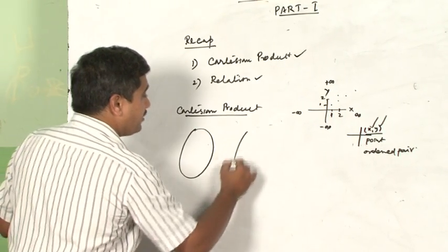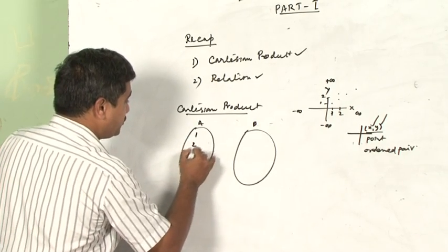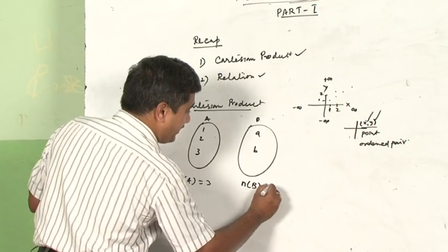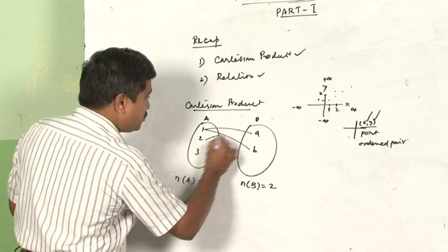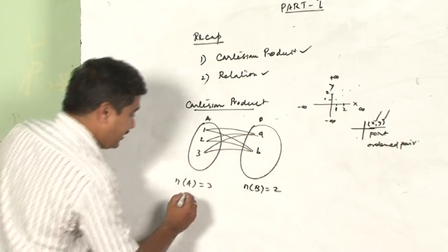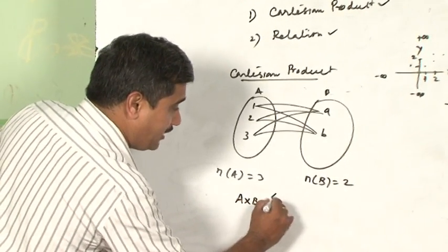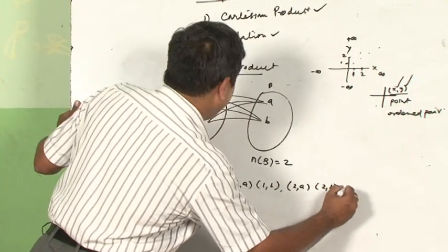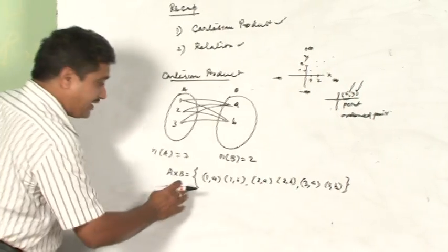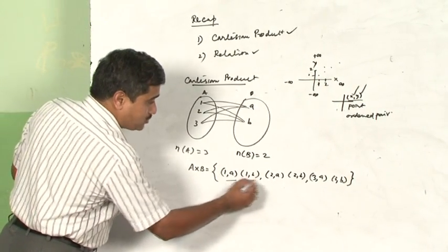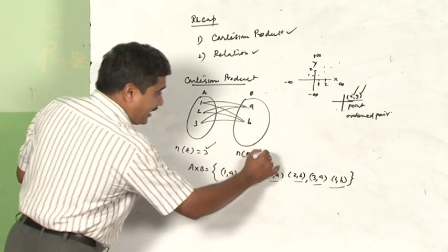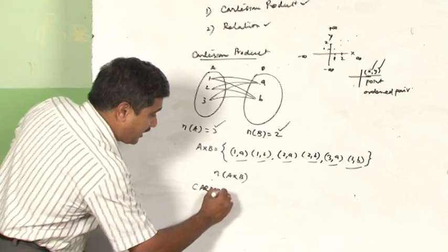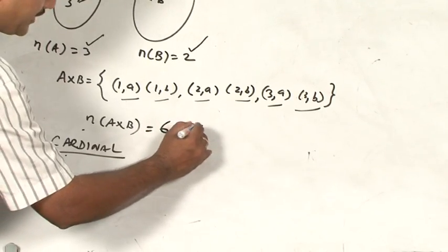Let us look at Cartesian product with two sets: A = {1, 2, 3} and B = {a, b}. Set A has three elements and set B has two elements. Connecting them gives ordered pairs: (1,a), (1,b), (2,a), (2,b), (3,a), (3,b). If you count, that is six ordered pairs. So n(A) = 3, n(B) = 2, and n(A×B) = 6 — this is called the cardinal number of A×B, which equals three twos, i.e., six.